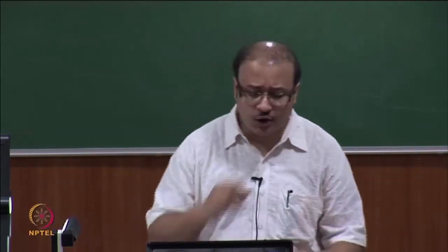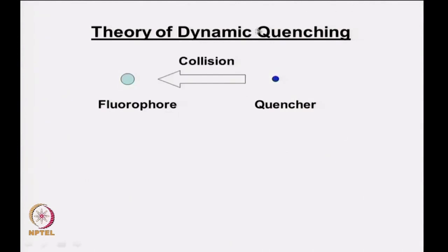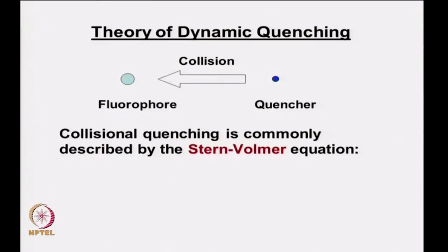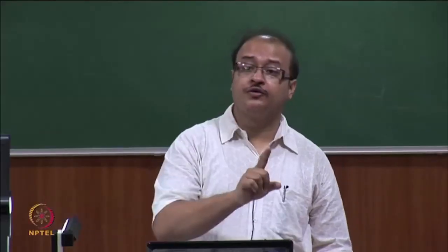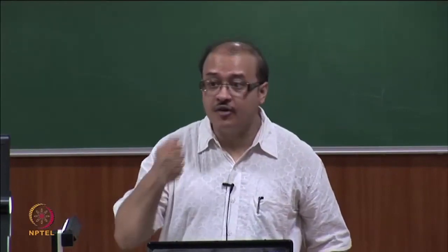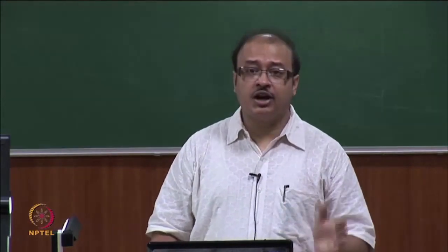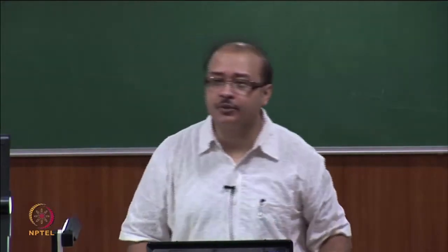Let us now go into the theory of dynamic or collisional quenching. You have a fluorophore and a quencher molecule. In dynamic or collisional quenching, the quencher collides with the fluorophore and de-excites it from its excited state, giving rise to a decrease in fluorescence. Diffusion plays a very important part in this type of quenching, since for the quencher to reach the fluorophore it must diffuse and then collide.